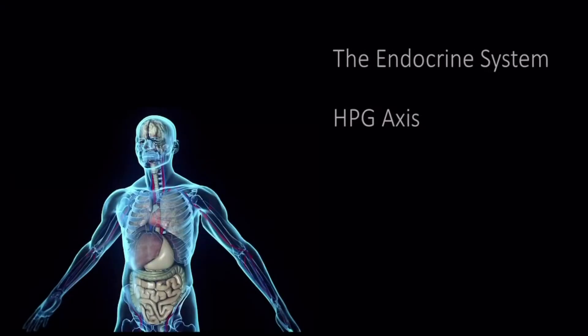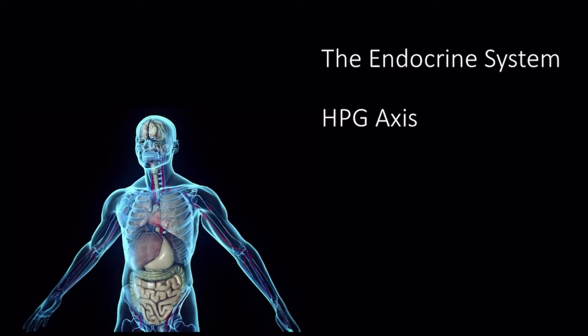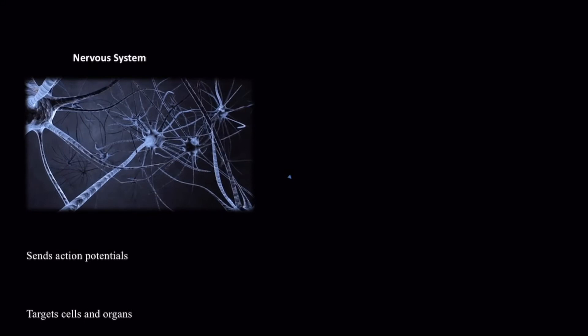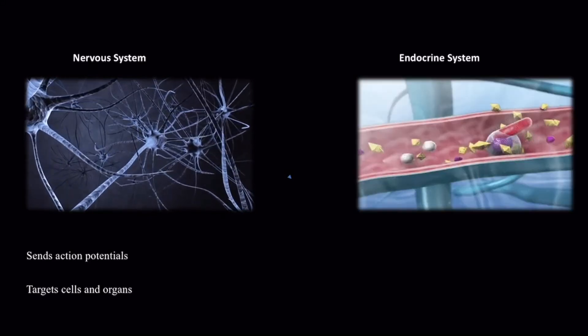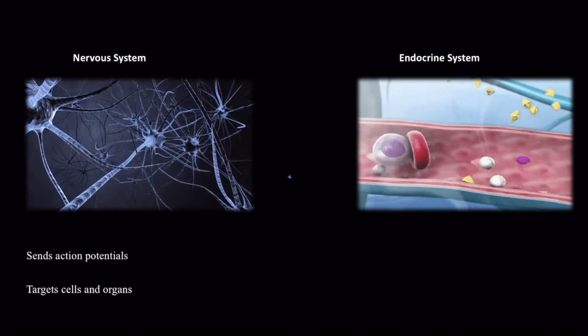A person's every move is executed by the constant instructions produced by the nervous and endocrine systems. The nervous system sends lightning fast electrical signals called action potentials to target cells and organs. The endocrine system uses a slower and more widespread approach to signaling.